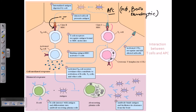As the T helper cell approaches, it will recognize this particular antigen — denoted here with the red dot — via the T cell receptor present on the surface of the T cell. The T helper cell recognizes this antigen with its T cell receptor, and after receiving a signal it becomes activated. Once activated, it secretes important chemical mediators called interleukins.